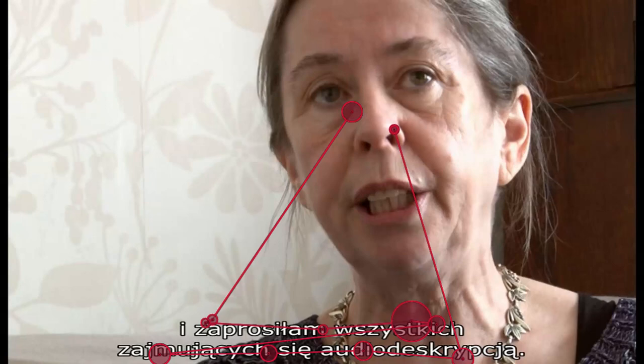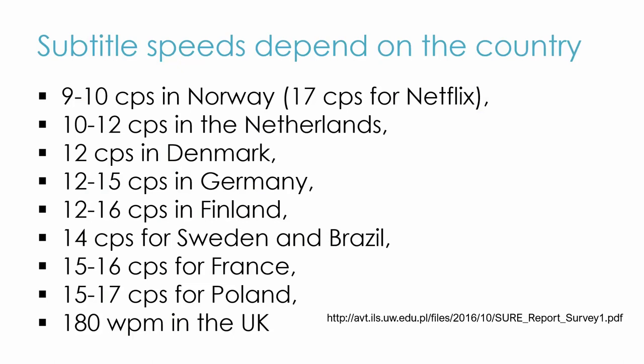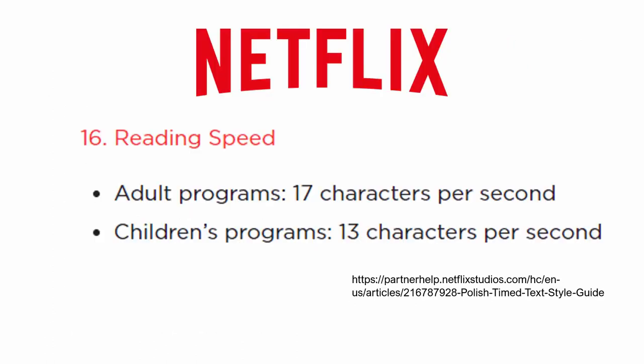What exactly is the limit or the optimum subtitle speed depends on many factors, such as film complexity or viewer characteristics. Different countries have different traditions regarding subtitle speeds. A study we conducted among professional subtitlers showed a great variety of speeds used on the market now. As a subtitler, you probably work for different clients who have different requirements when it comes to reading speed, possibly ranging from about 12 to 17 characters per second for languages with alphabetic script. On Netflix, for instance, the speed of translated interlingual subtitles is currently 17 characters per second for adult programs, but 20 characters per second for intralingual English-to-English subtitles.